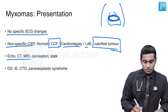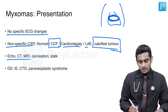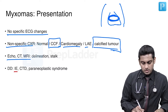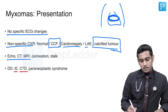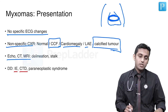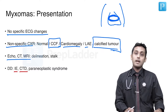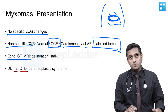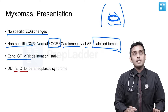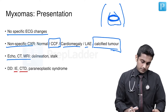The differential diagnosis for myxomas, depending on their size and location, could be infective endocarditis, other collagen vascular diseases or connective tissue disorders, and some paraneoplastic syndromes, because their presenting signs can be quite variable.